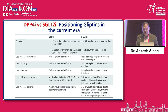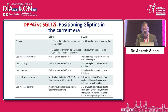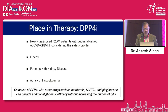There is a wide range of patients where this drug can be used. Efficacy is almost comparable to SGLT-2 inhibitors, with a complementary mechanism of action. In renal impairment, it is well-tolerated and effective. In elderly, well-tolerated and effective. In females, well-tolerated and effective. In hypertensive patients, also beneficial. And in obese patients it can be used because it is weight-neutral. Placement therapy is basically in newly diagnosed type 2 diabetes patients without established ASCVD, CKD, or heart failure. Co-administration of DPP-4 inhibitors with other drugs such as metformin, SGLT-2 inhibitors, and pioglitazone can provide additional glycemic efficacy without increasing the burden of hypoglycemia.